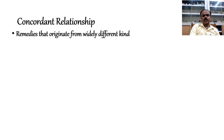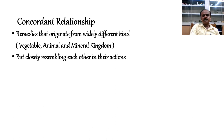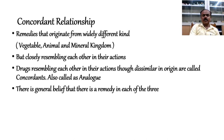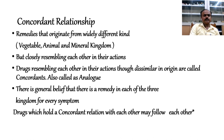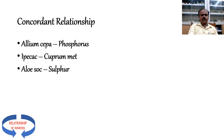Concordant relationship: there are remedies that originate from widely different kingdoms—vegetable, animal, mineral—yet many drugs closely resemble each other in their actions. Drugs resembling each other in action though dissimilar in origin are called concordants, also called analogs. There is a general belief that there is a remedy in each of the three kingdoms for every symptom. Drugs holding a concordant relation with each other may follow each other. Examples of concordant relationships include Allium Cepa, Phosphorus, Ipecac, Cuprum Metallicum, Allium Sativum, Sulphur, Mezereum, Mercurius, and many more.